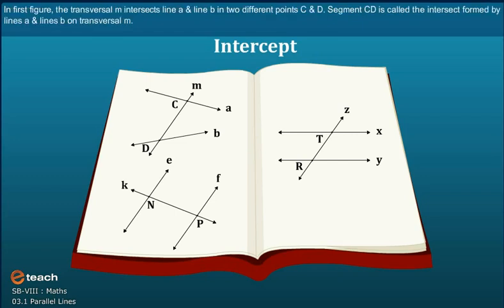In the first figure, the transversal M intersects line A and line B into two different points C and D. Segment CD is called the intercept formed by lines A and B on the transversal M.